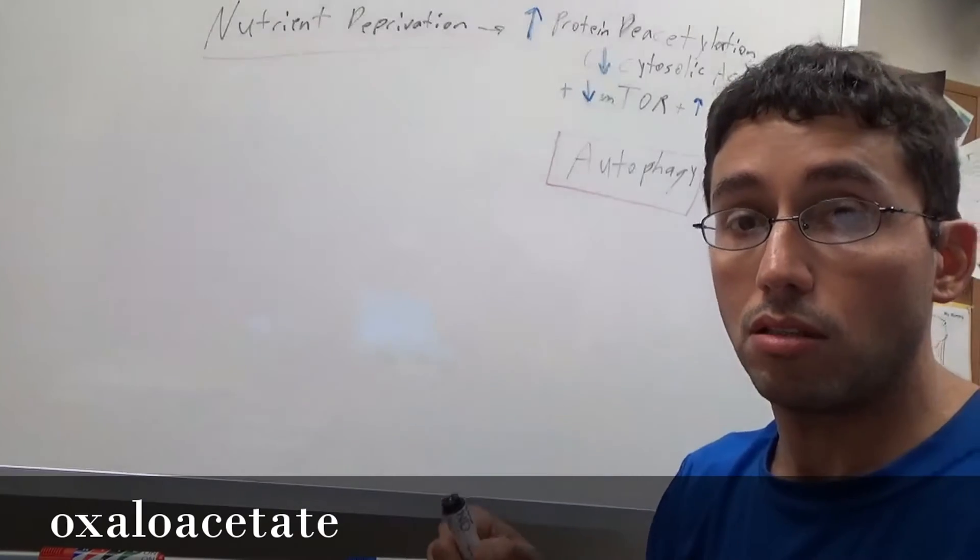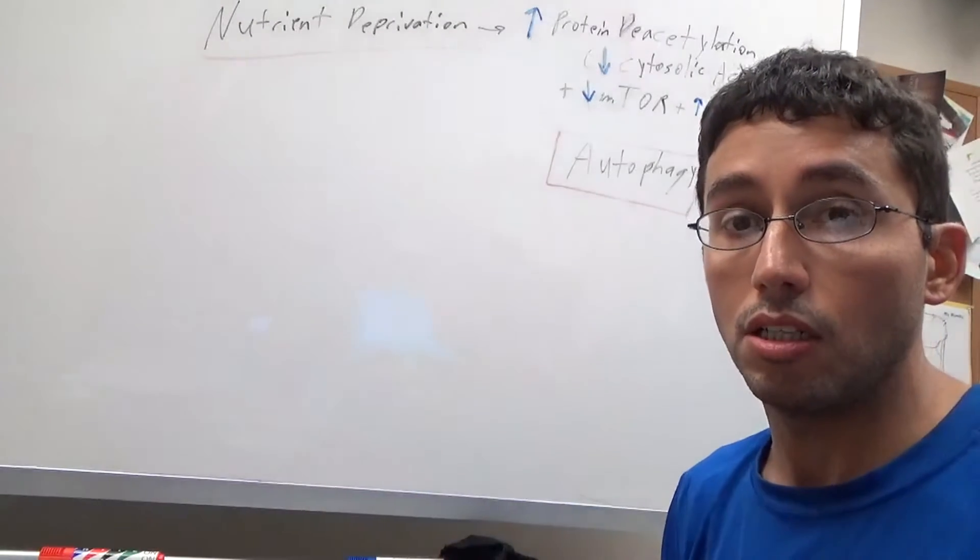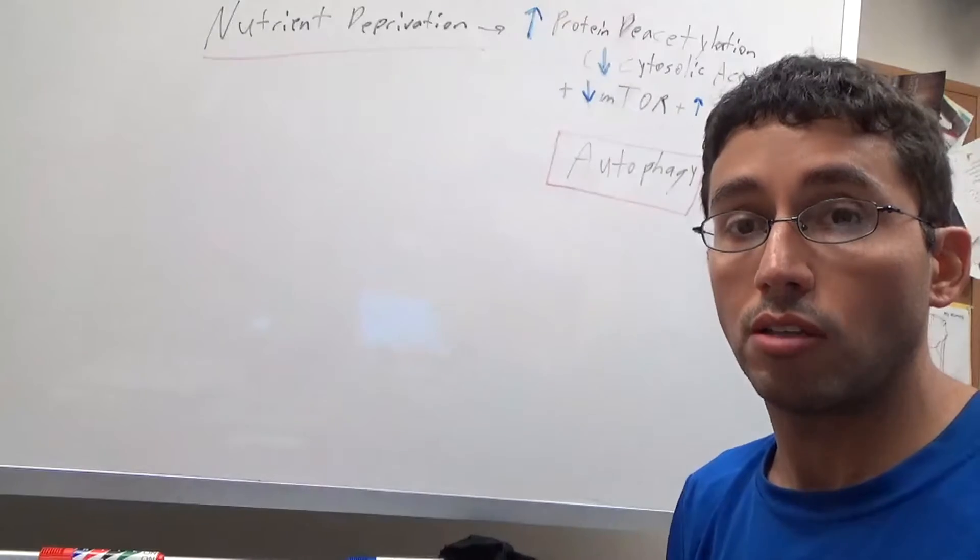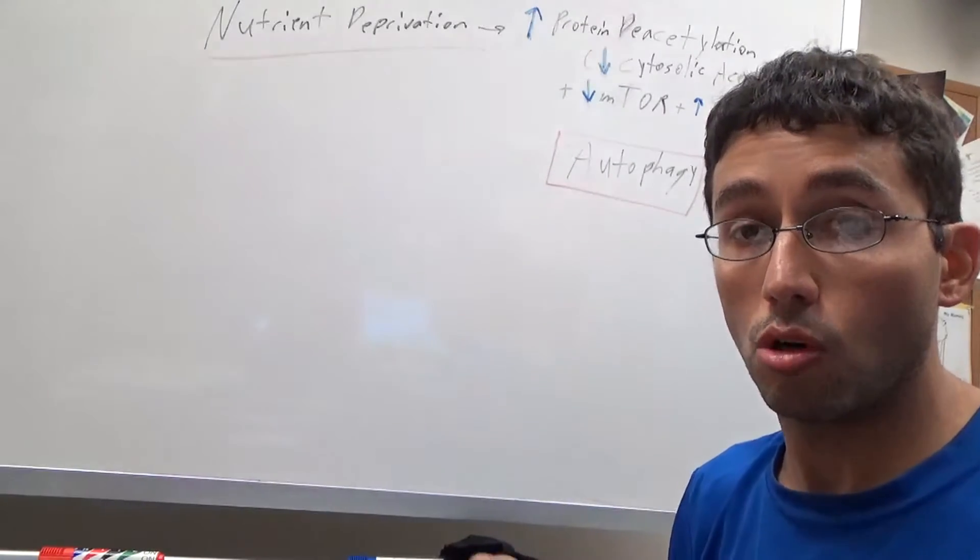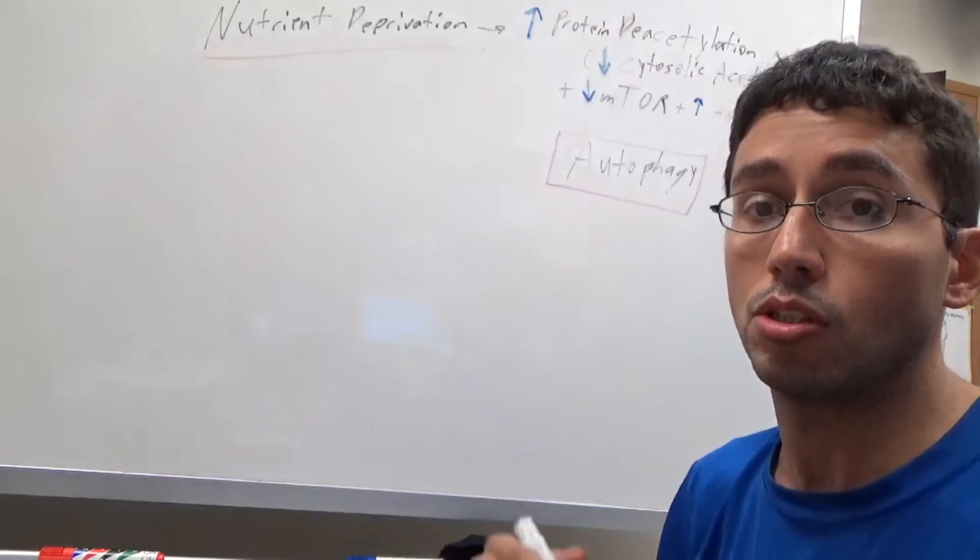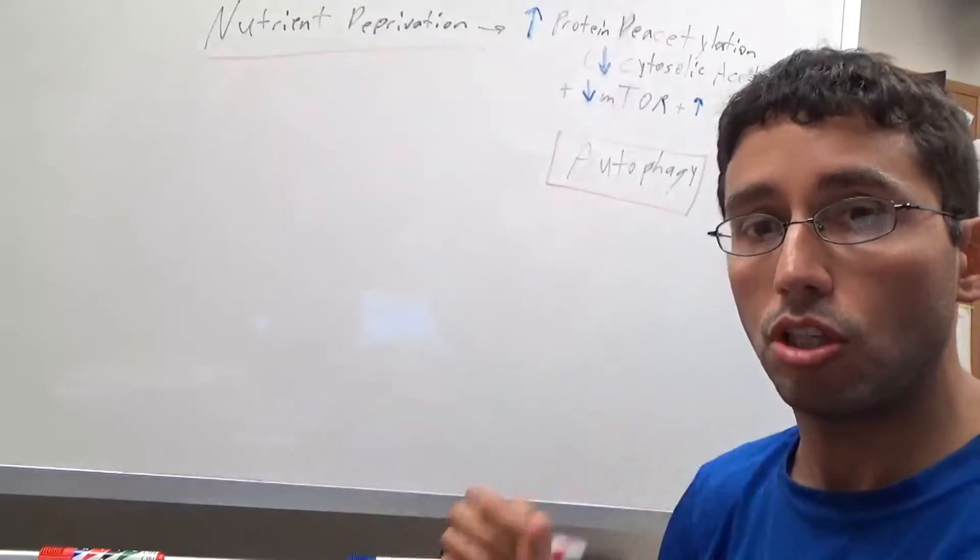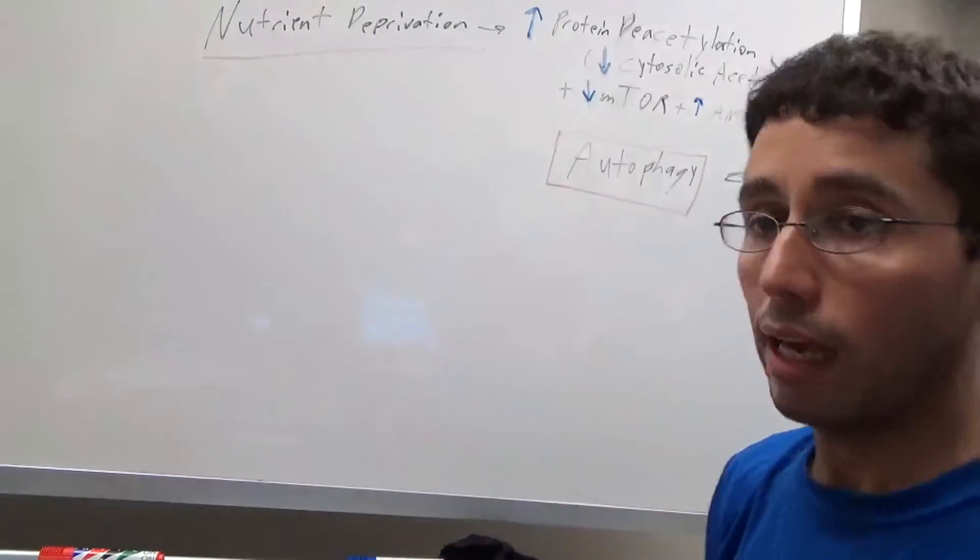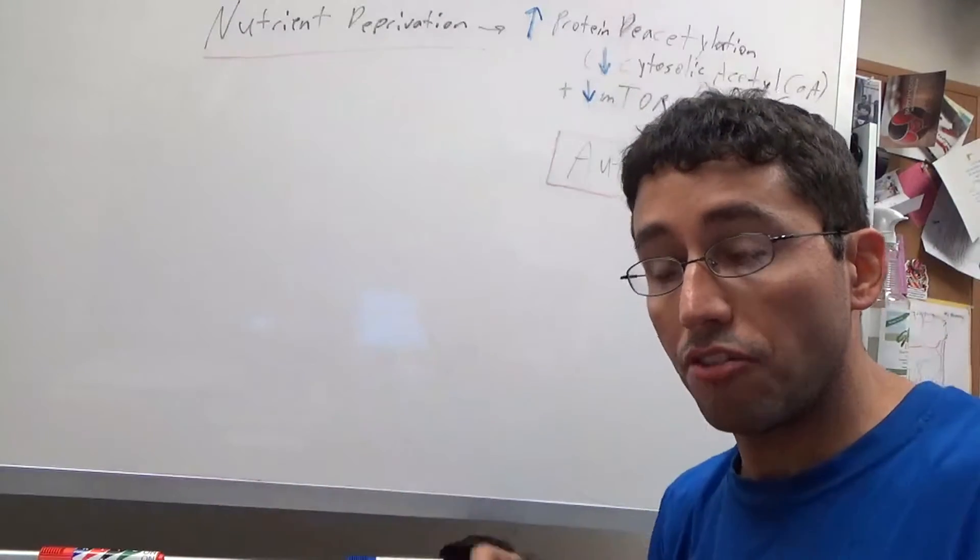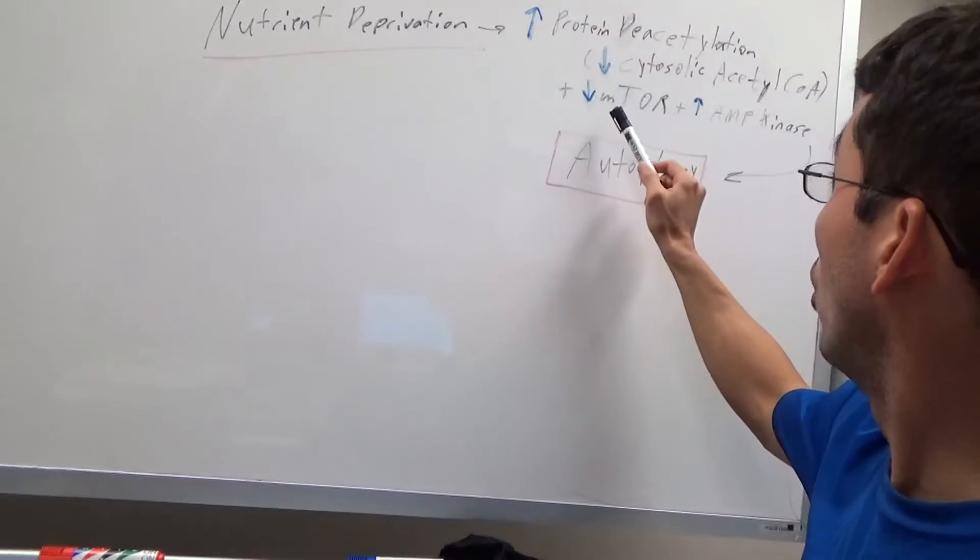When that decreases, acetyl coenzyme A is unable to enter the citric acid cycle for normal energy metabolism, so you have gluconeogenic pathways and ketosis. This is all connected to autophagy, so let's move on.